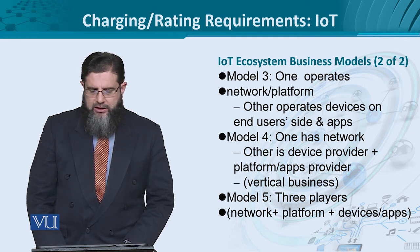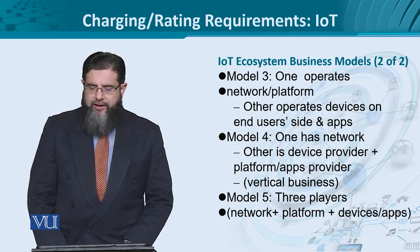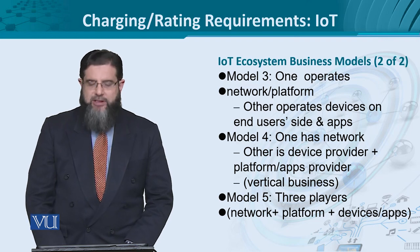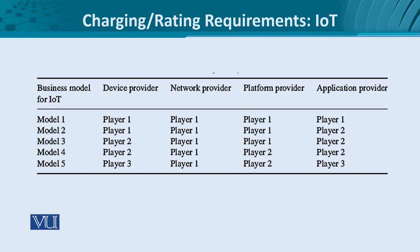Finally, we could have three entirely different players: a network provider, a platform provider, a device provider, and sometimes a separate application provider as well. All of this can be summarized in a table from the book NGN Architecture by Tony Janewski, published by John Wiley. The first column lists five different models, with separate providers for each role. Depending on the regulatory regime of a country and business opportunities, different players can participate in all or some of these sectors.